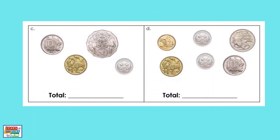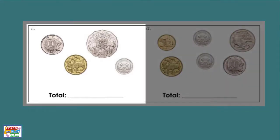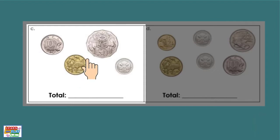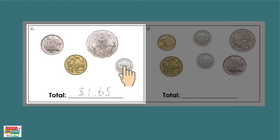Now let's move on to question C. Pause the video now and count the collection of coins. Let's see if you counted it correctly: one dollar, a dollar fifty, a dollar sixty, one dollar and 65 cents.